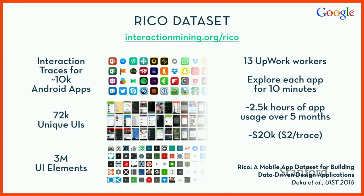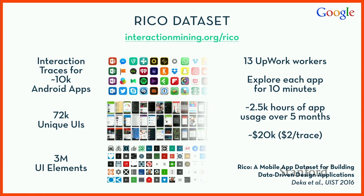To do this work, we needed a dataset large enough to understand what the most common UX/UI concepts in mobile apps are, and whether we can build automatic methods of detecting them. We released a dataset called RICO, using the same capture technology as Erica. It provides interaction traces for around 10,000 Android apps — more than 72,000 unique UIs, approximately 3 million UI elements. We used this to identify a lexicon of UX concepts, coding 73,000 potential icons and 130,000 text buttons.